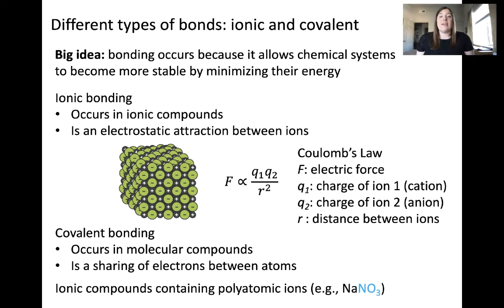The other, NO3 minus, nitrate, is the anion. The cation and anion are attracted to each other via electrostatic attraction. Therefore, this compound has ionic bonding.